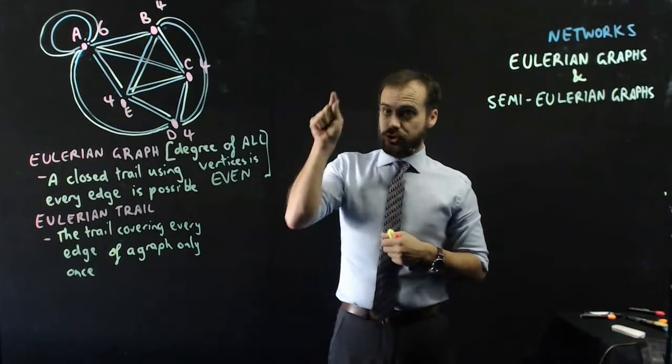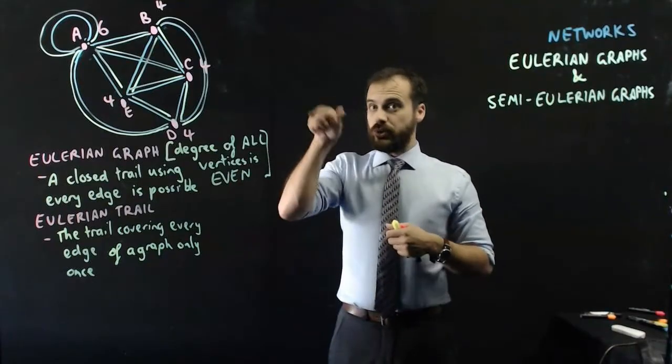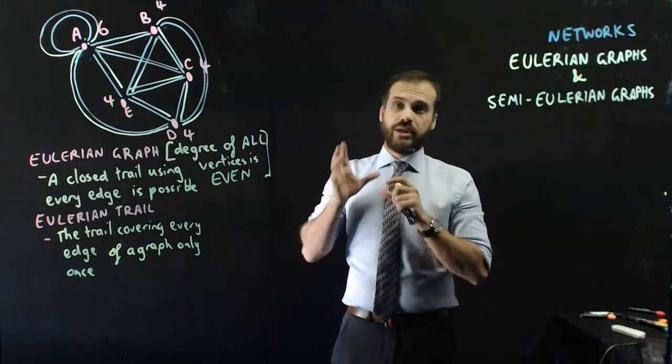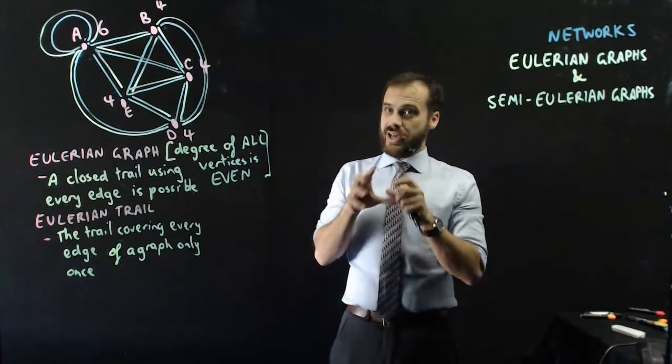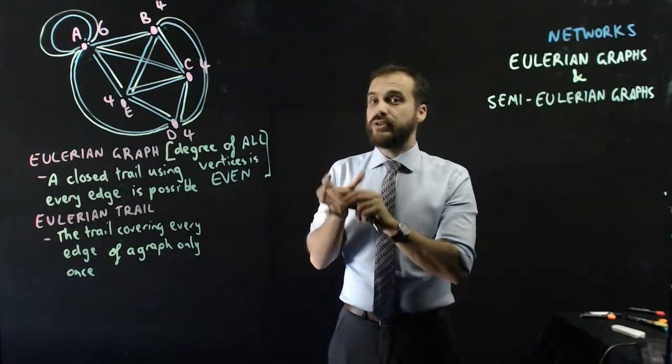Just draw a bunch of points and then join them up and I don't care how you join them up, just join them up in such a way that every single vertex has an even degree.